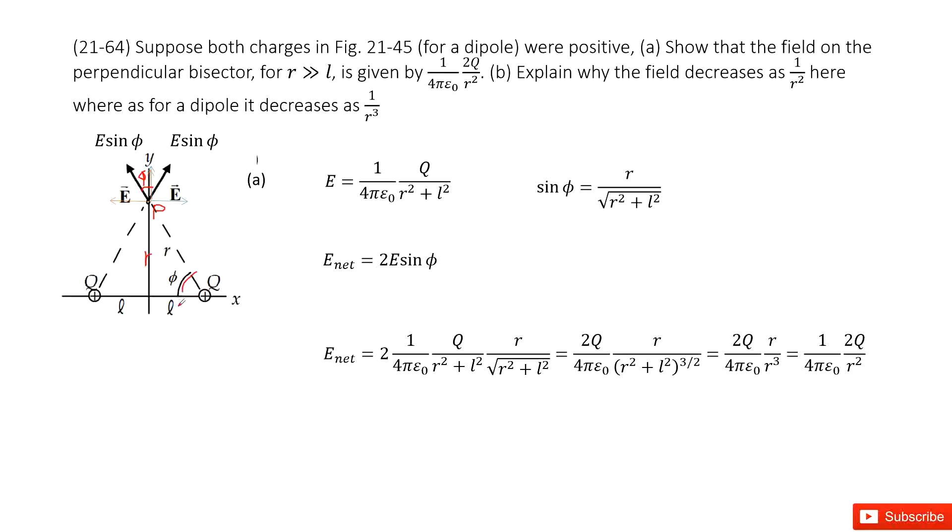You can see this side is R, this side length is L, so this side length must be the square root of R squared plus L squared. Because this part is Q divided by R—R squared is the distance squared, so we write it as this one.